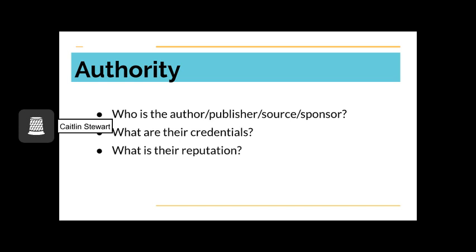The third factor to consider is authority. Who is the author, publisher, source, or sponsor of the source you are considering? What are their credentials? Be careful when considering that question — just because someone does not have a PhD does not mean that they are not a credible source. Credentials can look different ways and mean different things. A city planner analyzing how to maximize green space might be expected to have a degree, but residents of Seattle or construction teams are credible to provide information with or without a degree, so long as the information they share is appropriate to their experience. You might also consider their reputation — if they are a scholar, are they respected, or does everyone else in the field disagree with them? The answers to these questions might not always be clear, which is why we rely on multiple sources.